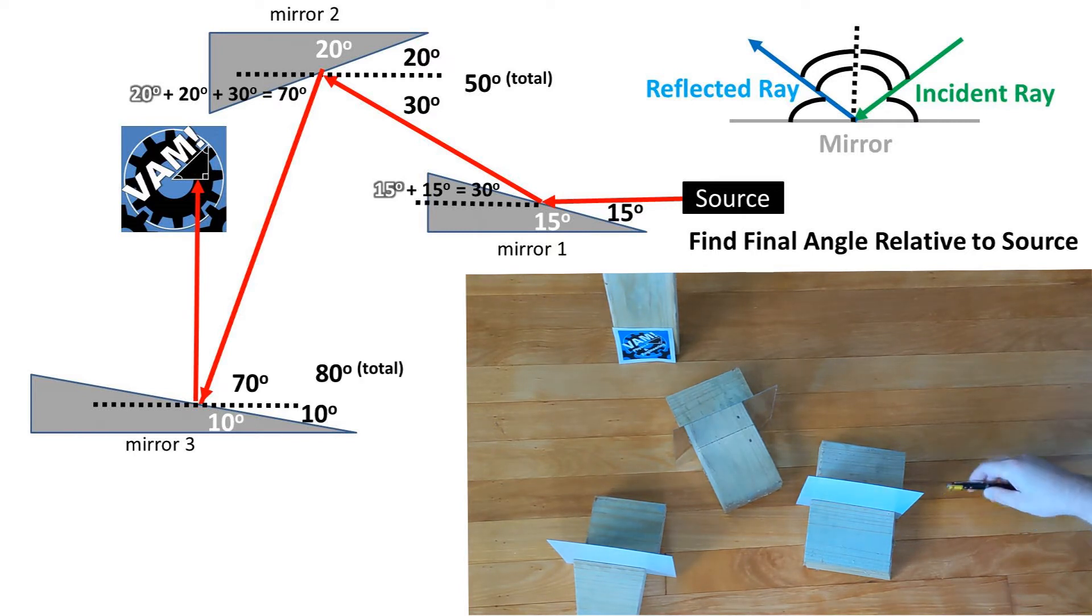This ray then hits the final mirror, which is at a 10 degree angle. The beam relative to the third mirror's surface is at a 10 degree angle, plus the 70 degrees from the previous mirror. So 80 degrees for the incident ray angle relative to the third mirror's surface.